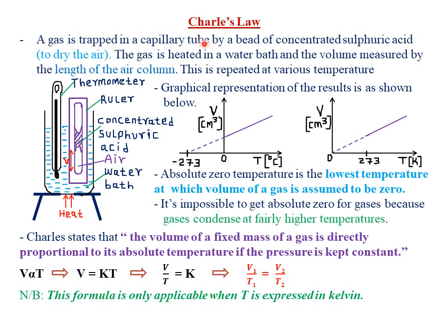To verify this law, you usually use a gas that is trapped in a capillary tube by a bit of concentrated sulfuric acid. The purpose of concentrated sulfuric acid is simply to dry the air or gas being used in that particular case. The gas is heated in a water bath, and the volume is measured by the length of the air column. The purpose of the water bath is to ensure uniform distribution of heat throughout all the apparatus in the experiment — both to the thermometer and to the gas trapped by the concentrated sulfuric acid.